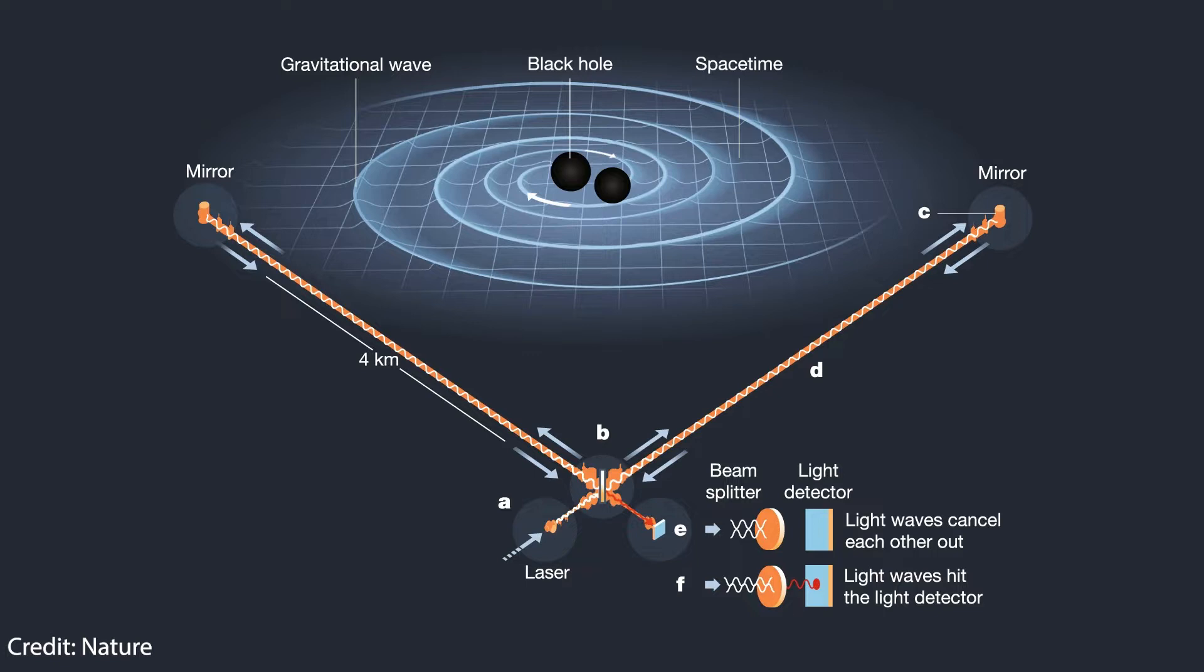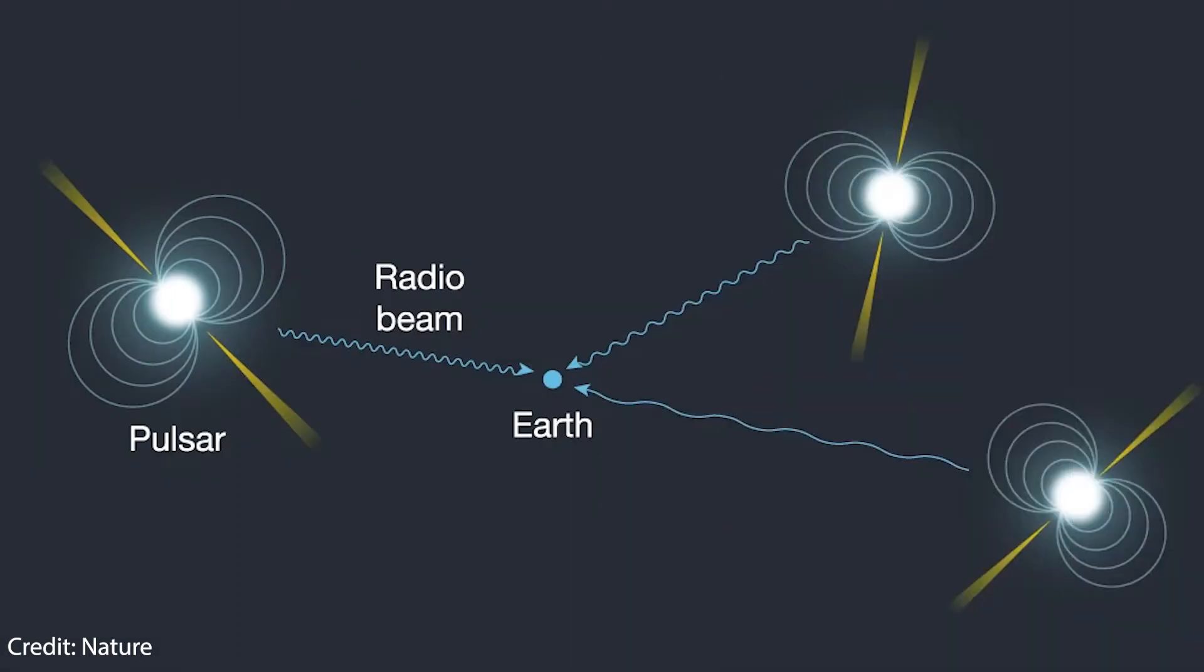LIGO was an impressive engineering feat, but in this latest work, scientists have turned their eyes outwards. They are planning to use pulsars, which are remnants of dead stars, to detect gravitational waves. So how do they do it? Let's discuss it.